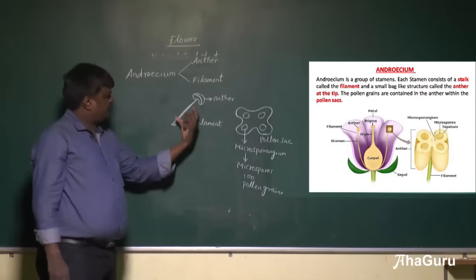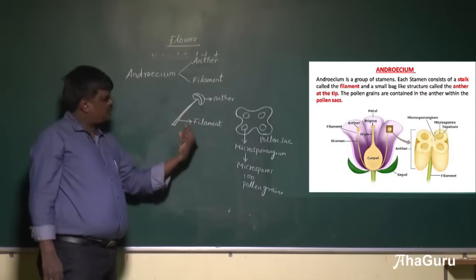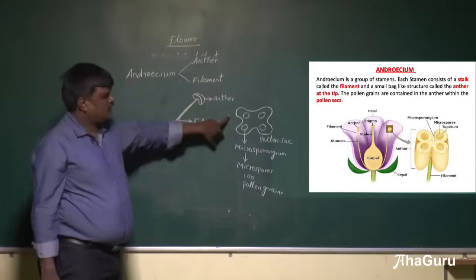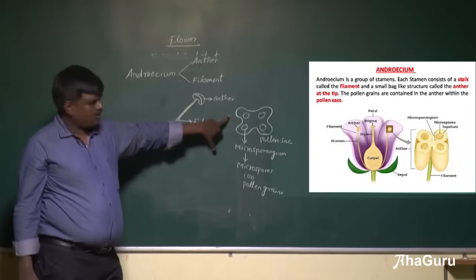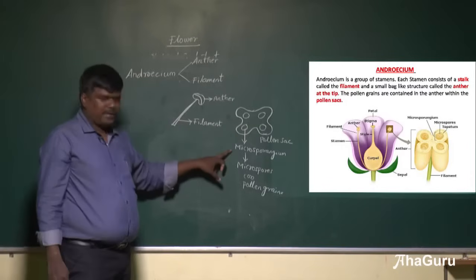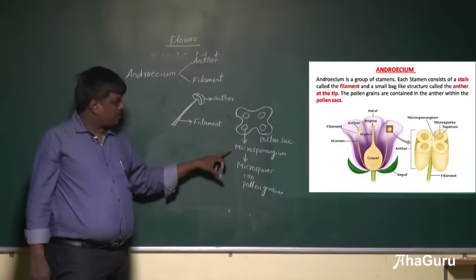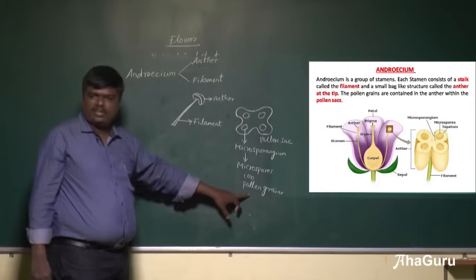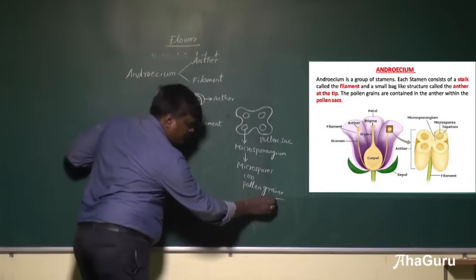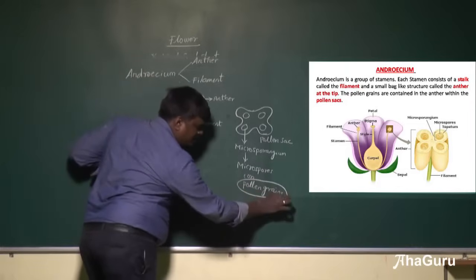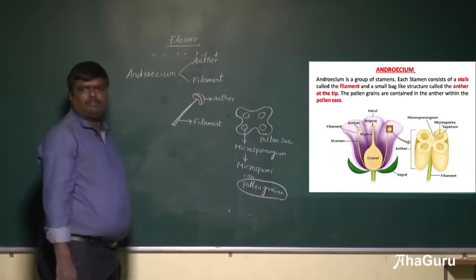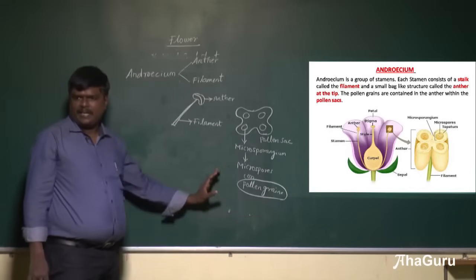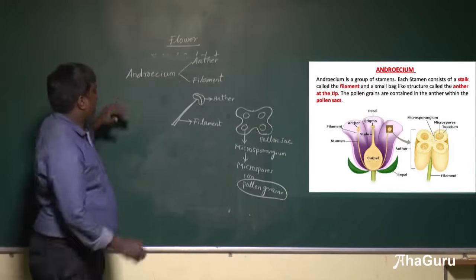So the androecium has two parts: filament and anther. The anther contains the pollen sac. The pollen sac contains microsporangium. The microsporangium produces microspores or pollen grains, which contain the male gamete.